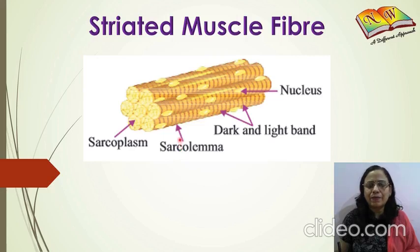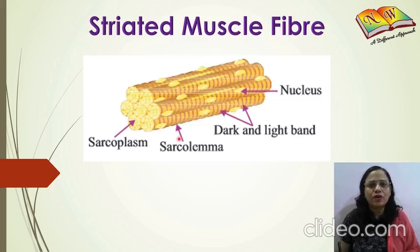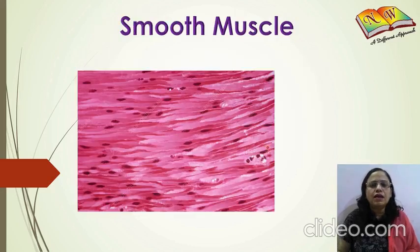These muscles are also known as skeletal muscles or voluntary muscles because they are basically found attached to the skeleton and are totally under our control. The movement of your arms, legs, and head is all because of the skeletal muscles or striated muscle fibers.